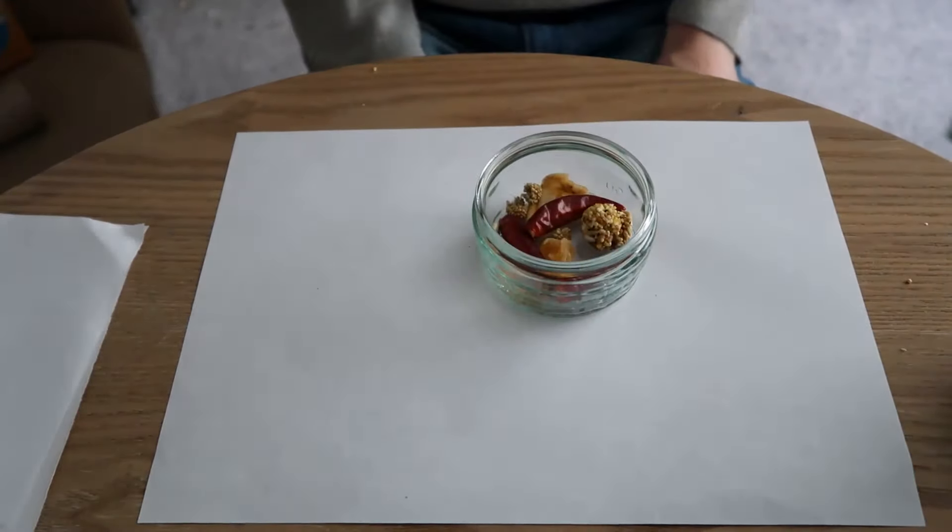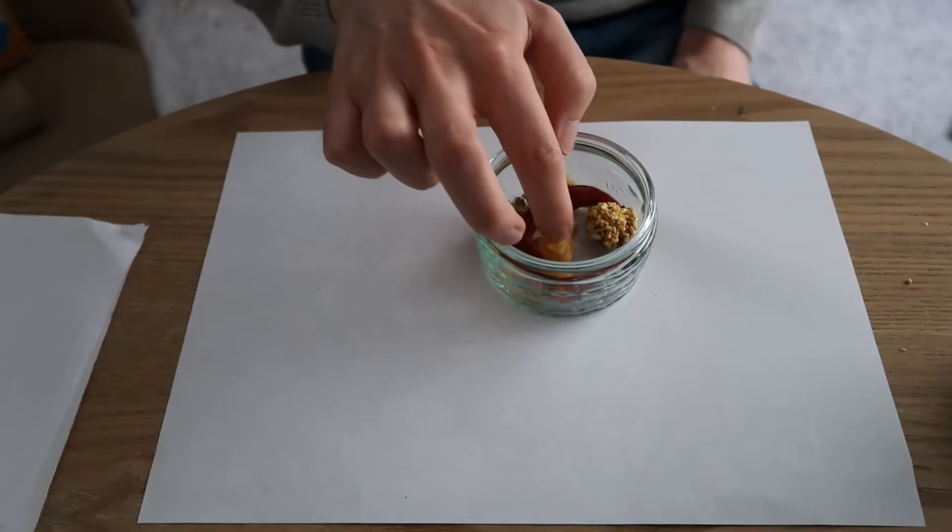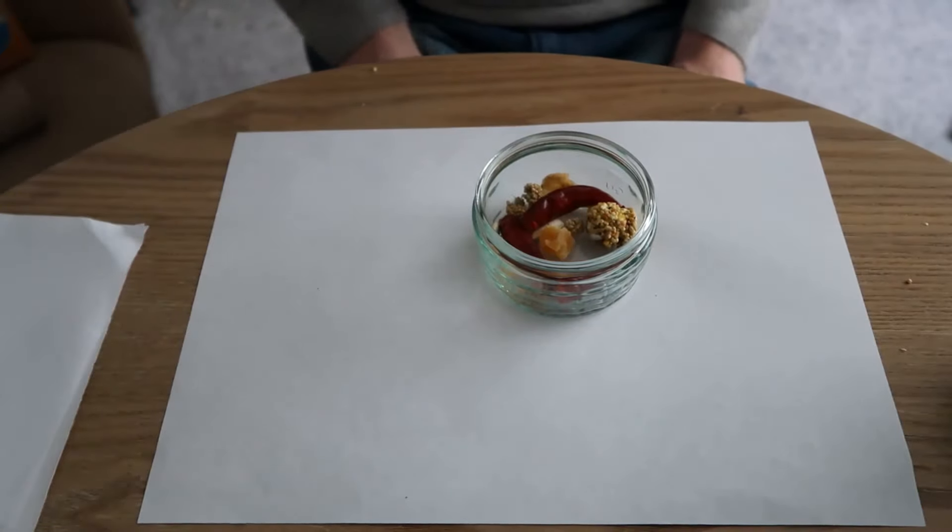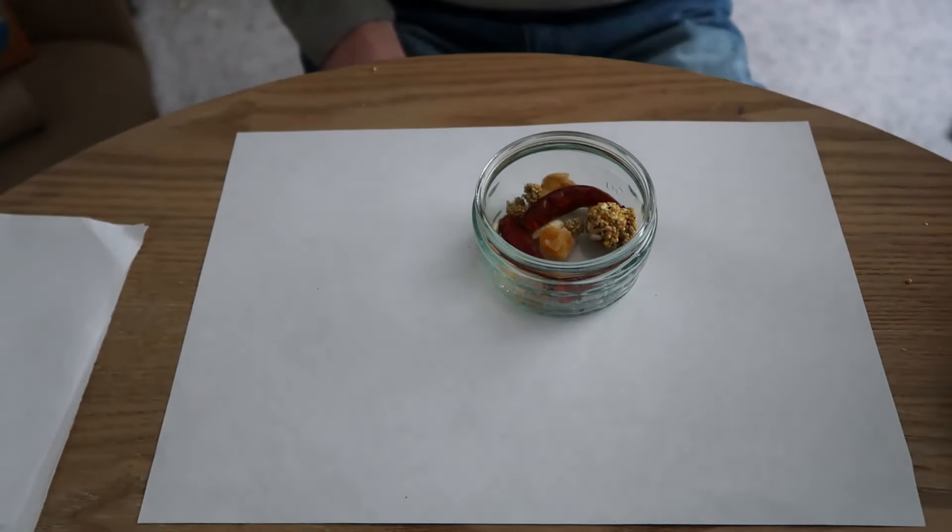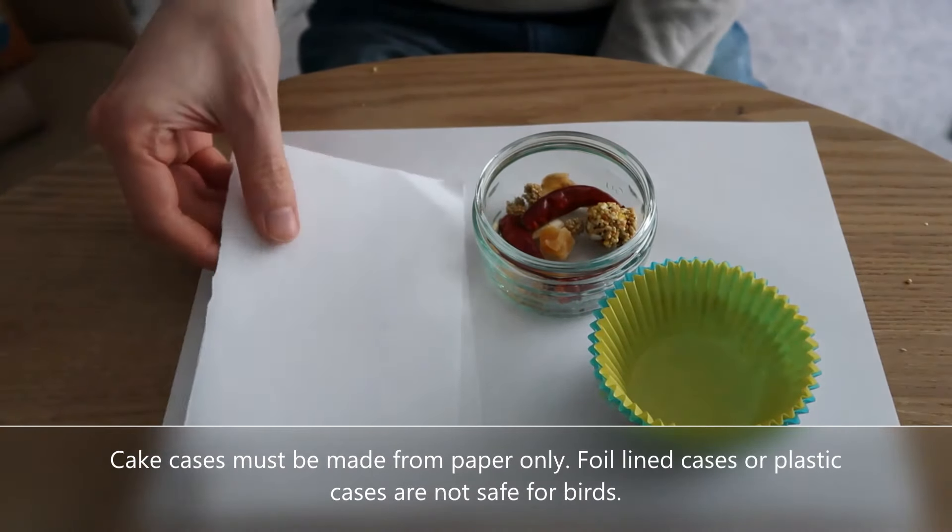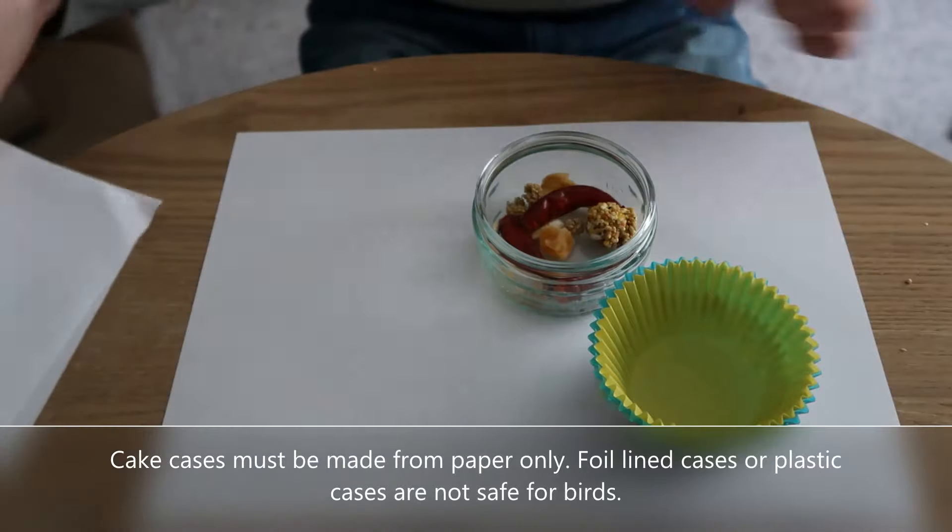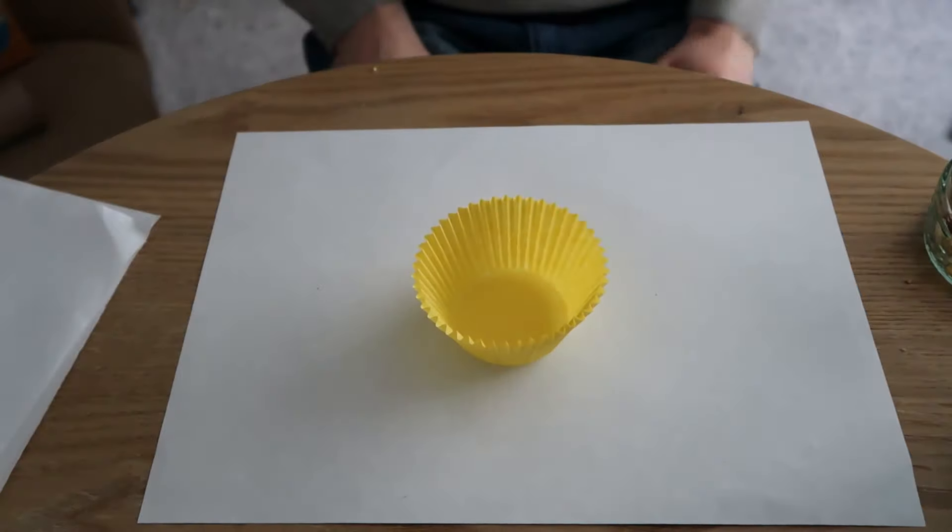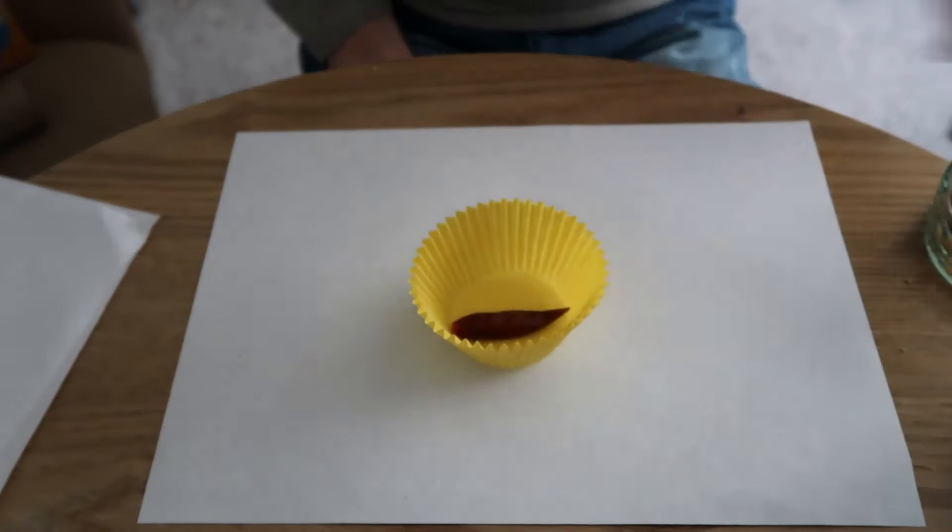For our next DIY bird toy, this one's an incredibly easy one. It's very easy to do. You will need your bird's favorite assortment of treats. In this case we have a nutriberry, we have some dried fruit, some millet as we always do, some pumpkin seeds, and some dried chili. You also need cake cases. These are awesome. If you don't have access to them, fear not, you can just use small squares of printer paper.